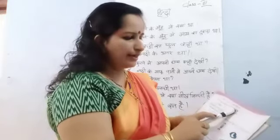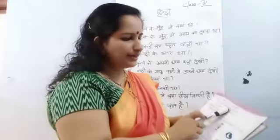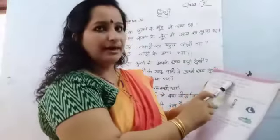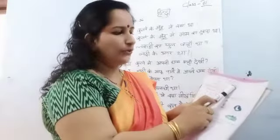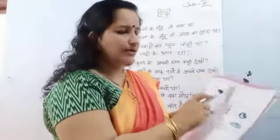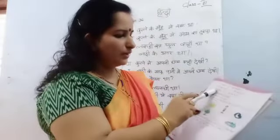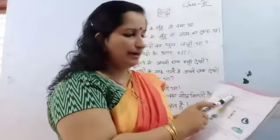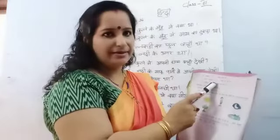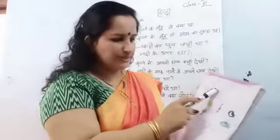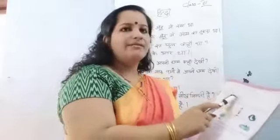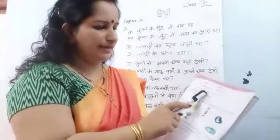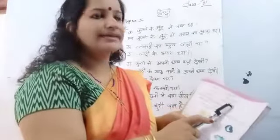Kal sarala ki nani aa rahi hai. Sarala and nani are both striling (feminine) so you have to use ki here. Next one — Ankur ka bhai padh raha hai. You have to use ka here because bhai is a pulling (masculine) shabd. Ankur ka bhai padh raha hai.